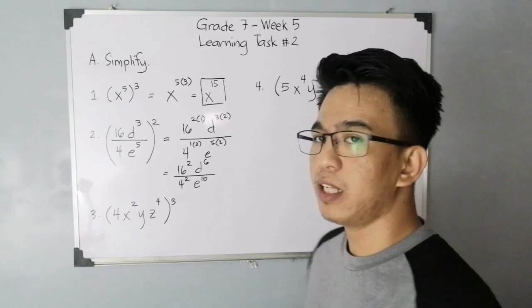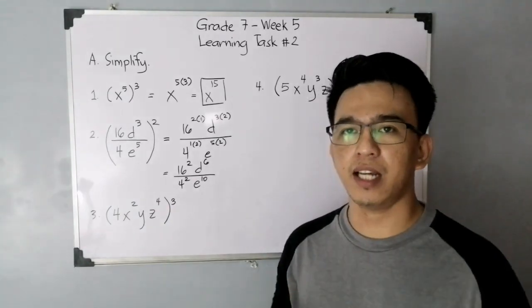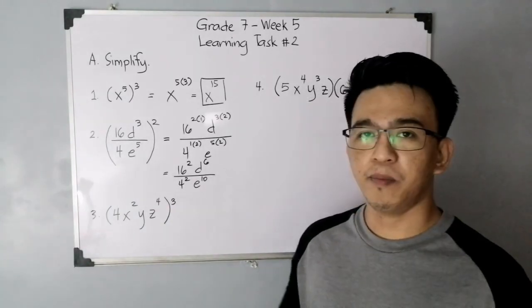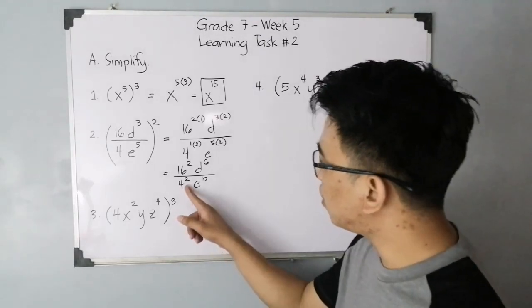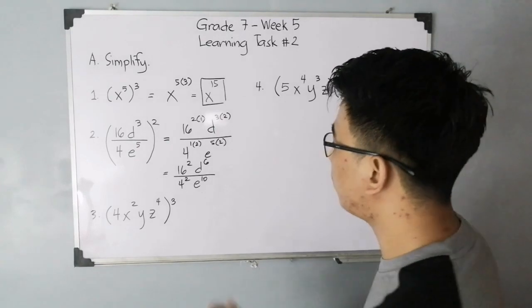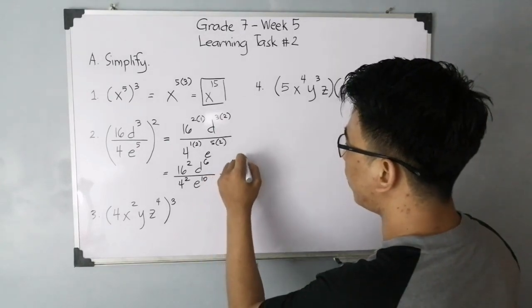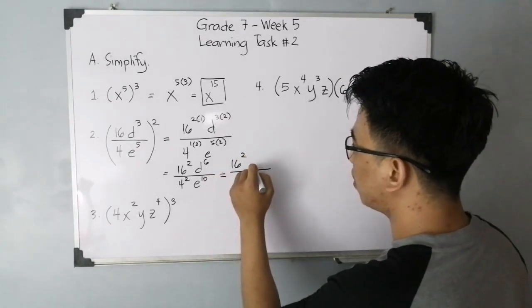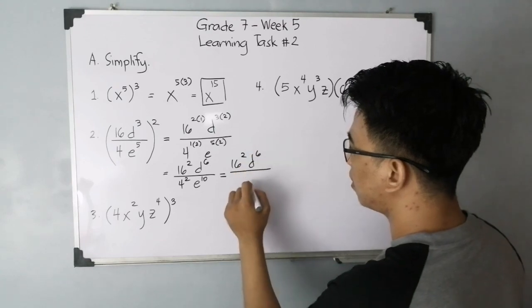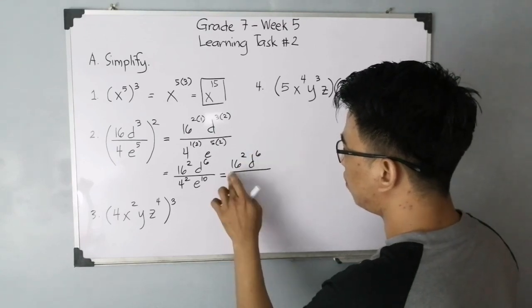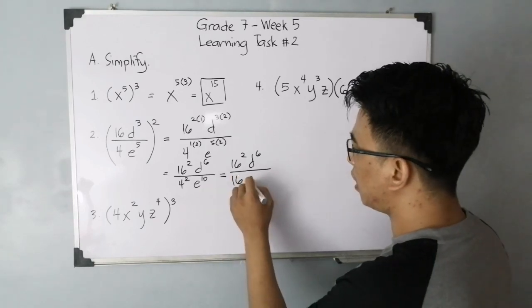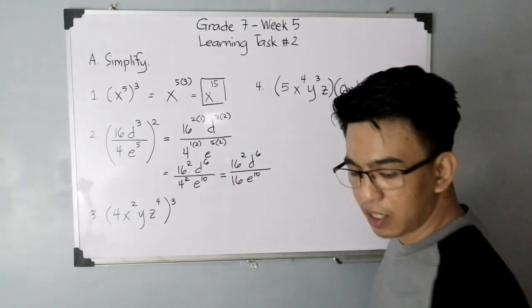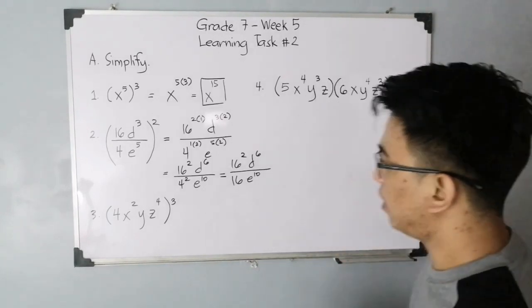Now, you might think the 16 squared is a very large number. Do we need to multiply that? Don't just simplify the 16 squared. Notice that you have 16 squared, which is equivalent to 16 squared over d raised to 6, and your 4 squared is equivalent to 16, e raised to 10.